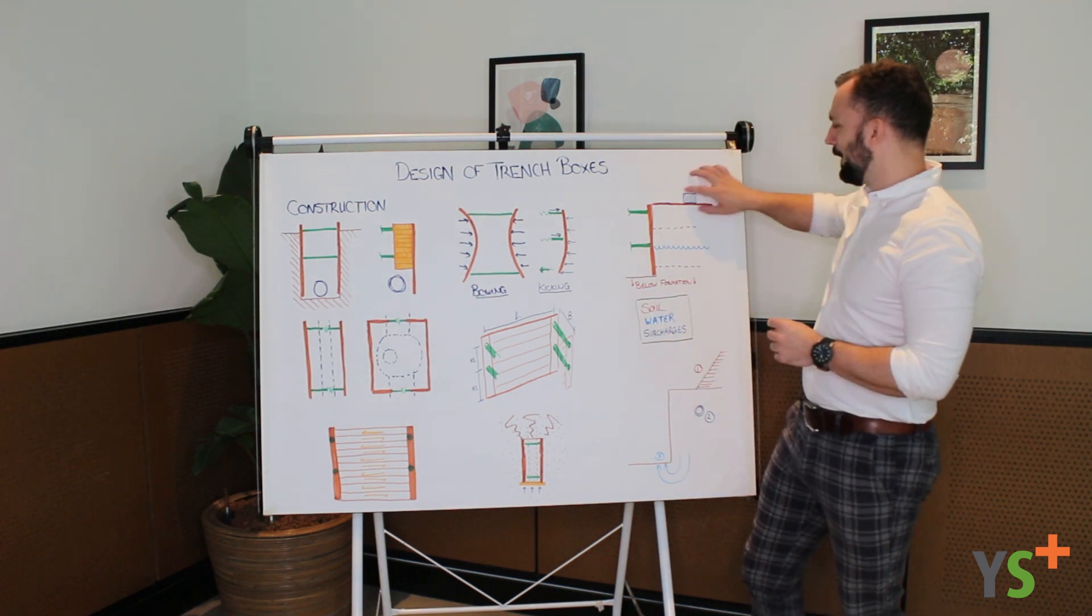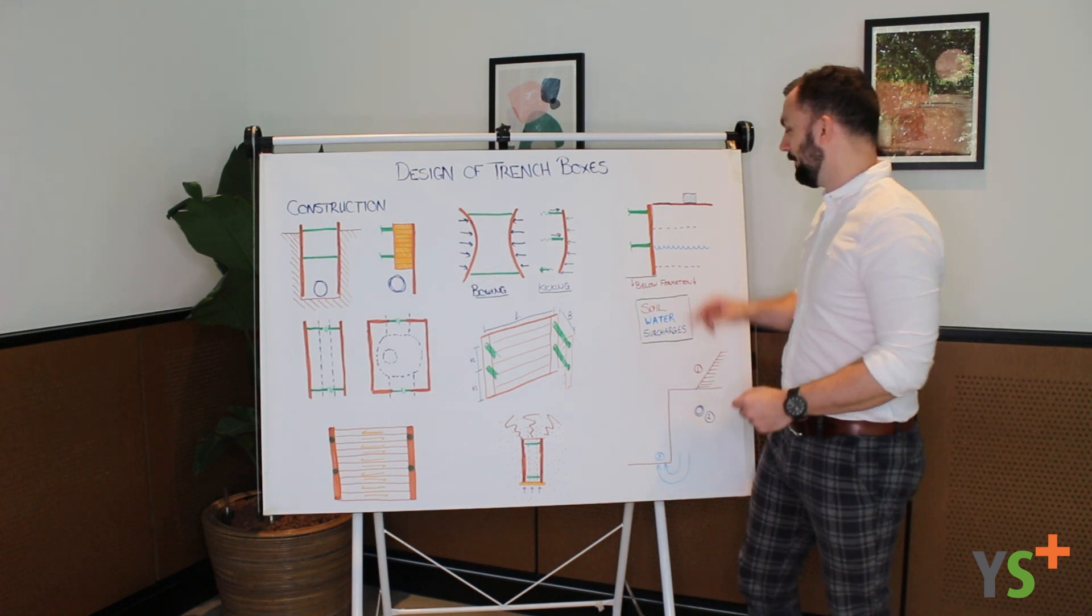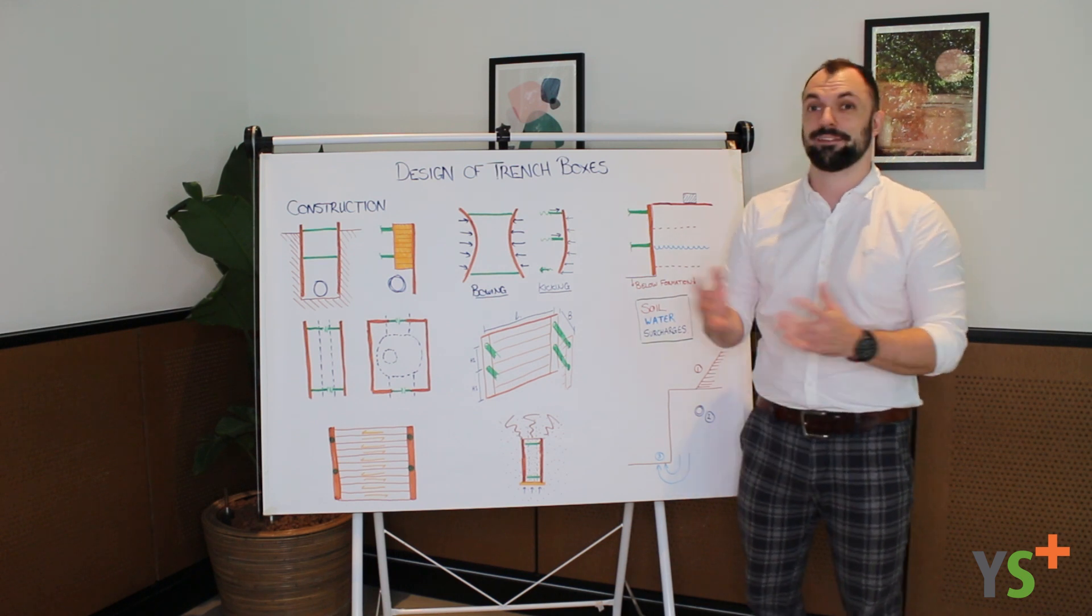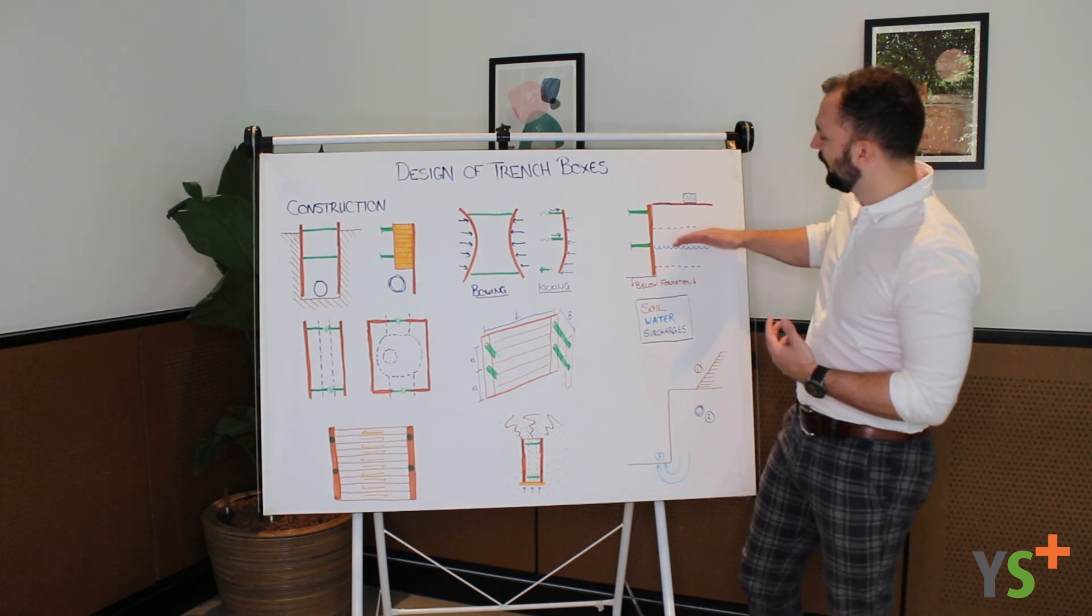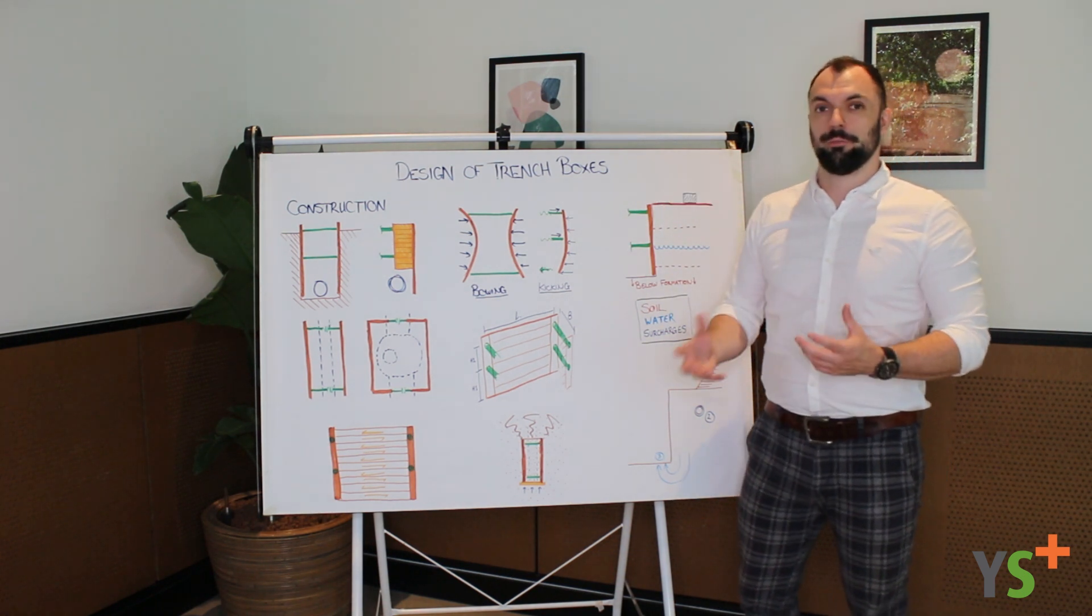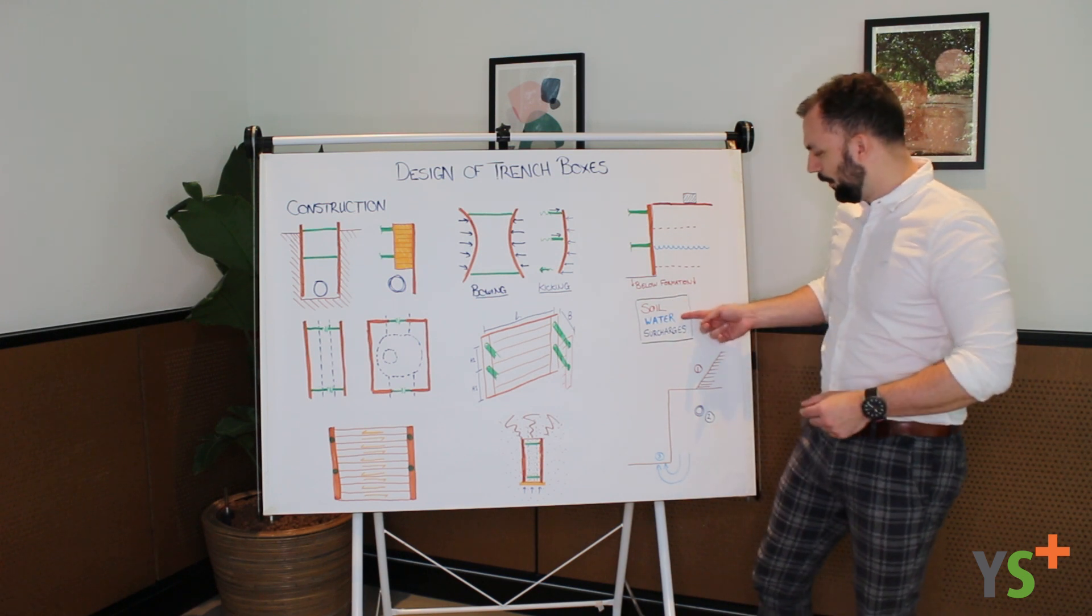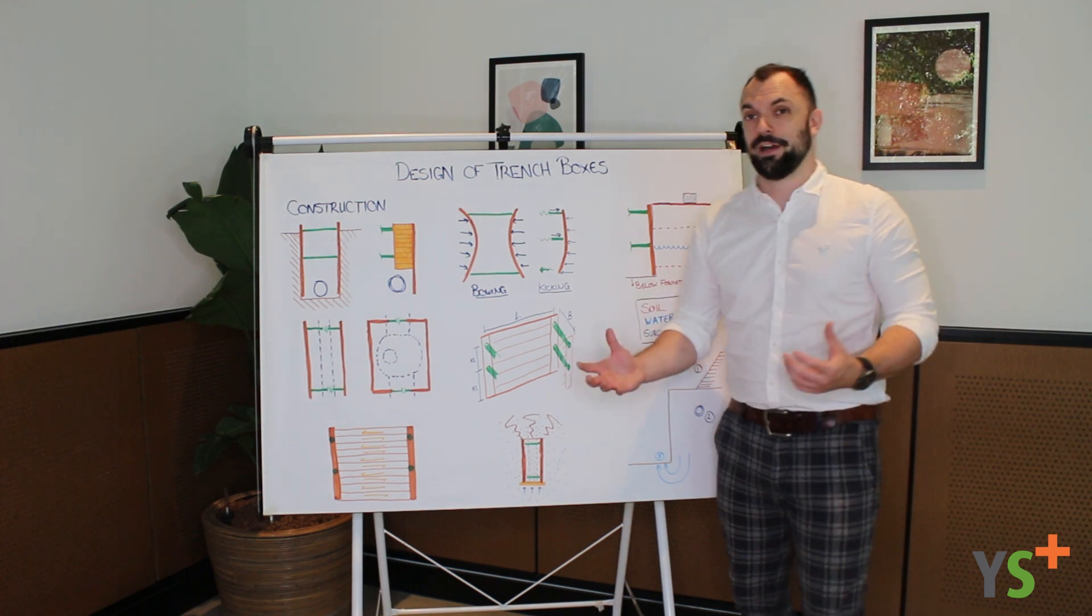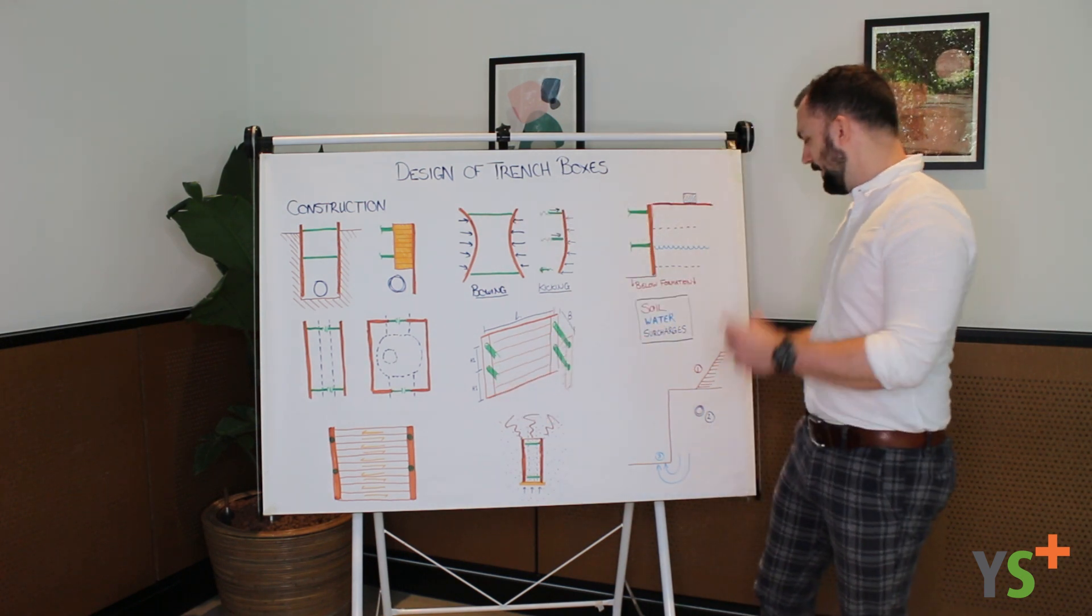Surcharges that are in and around the excavation will exert additional pressure. And one very important factor is the effect of water and how groundwater changes the pressure profile entirely. If you have no water there, it's a lot easier. If you have a water table that's very high, there can be some unwanted effects there from the water. So soil, water, and surrounding surcharges will all change the pressure profile and alter the structural design of this box.